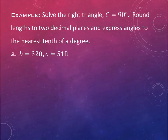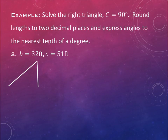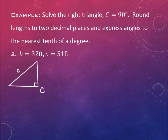This one is not drawn in, so we're going to draw the triangle first. It's a right triangle - we'll always call the right angle C, the side opposite is lowercase c, and we can put A and B wherever we wish. I'll put angle A on the bottom, so side a is opposite it, and angle B on top with side b on the bottom.